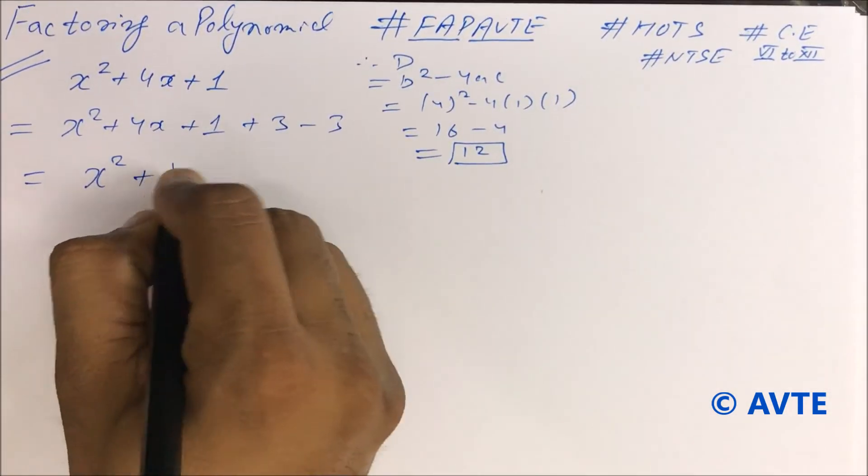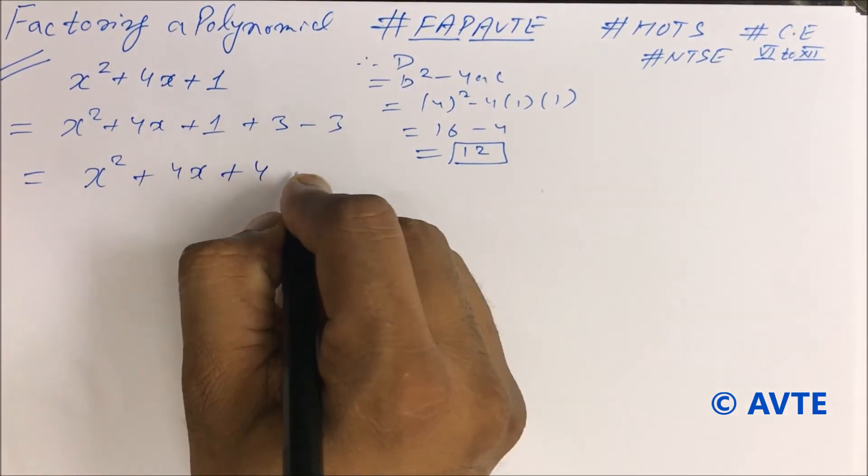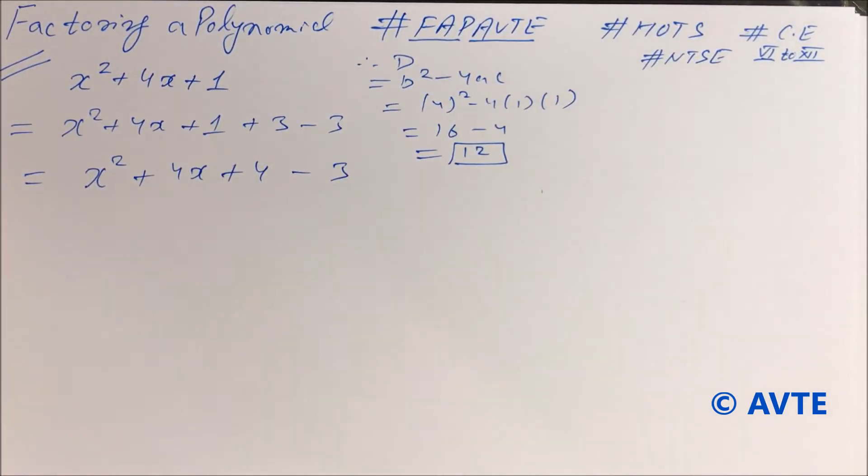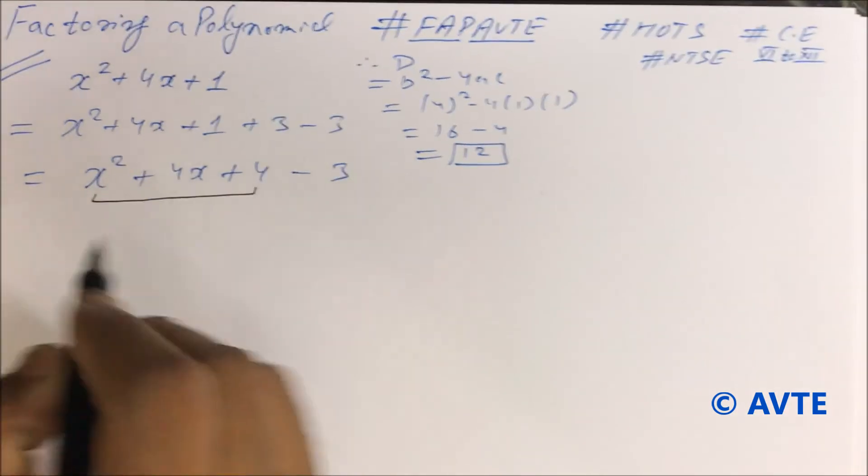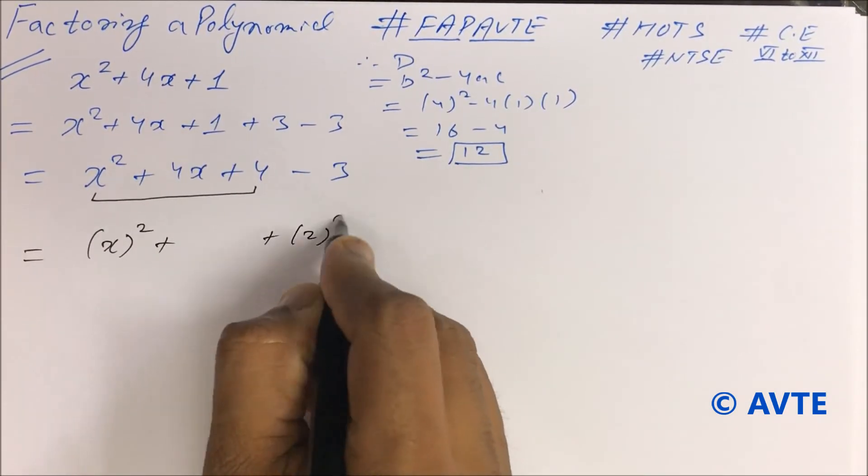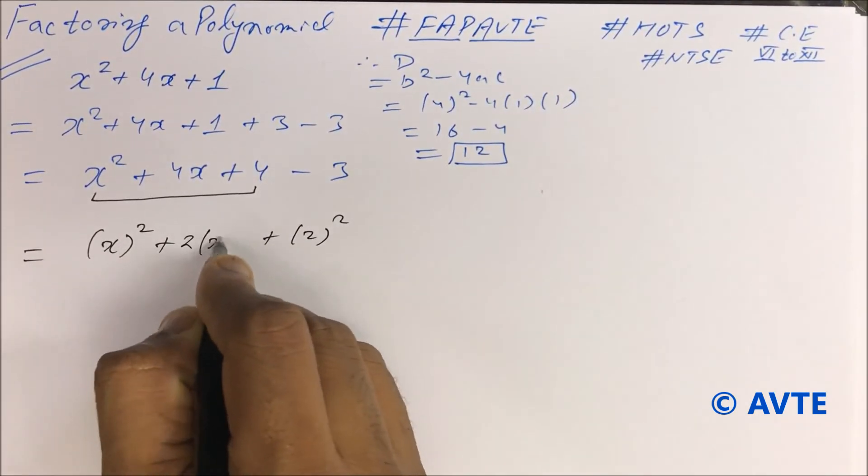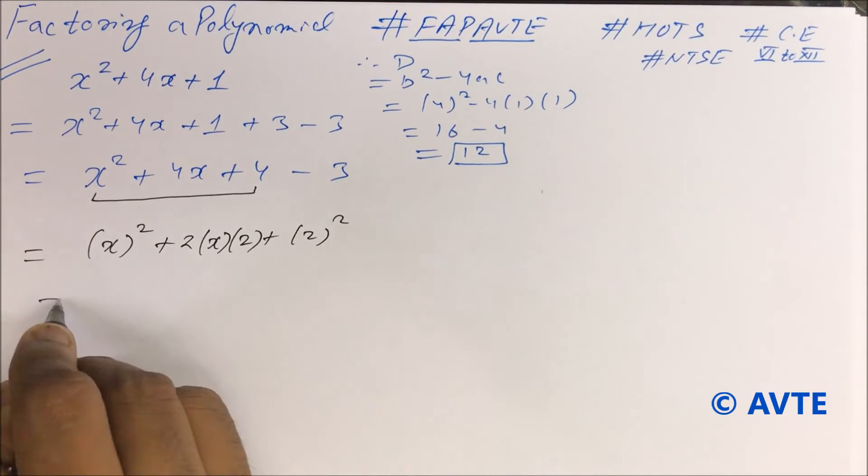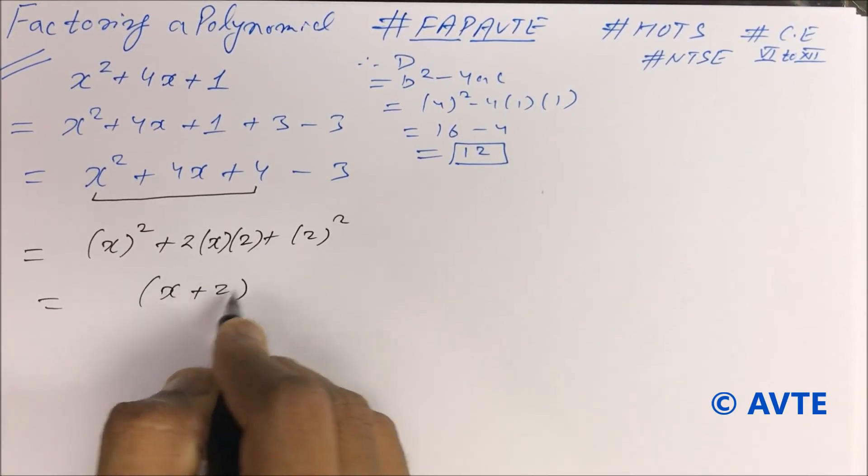This is x square plus 4x plus 4 minus 3. So now you can see that it becomes a perfect square, that is a square plus b square plus 2ab, that is a plus b whole square.